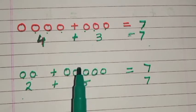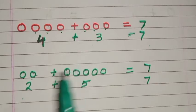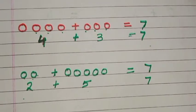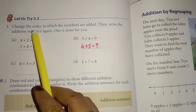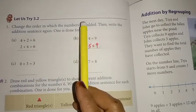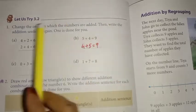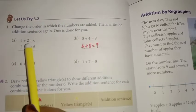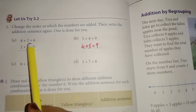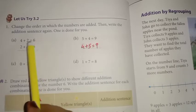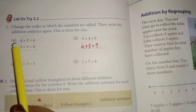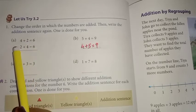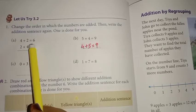You can find out some more addition sentences and do the activities in the textbook. The first activity: change the order in which the numbers are added, then write the addition sentence again. The first one is already done — four plus two is equal to six. We change the order: two plus four is equal to six. If you change the order, the answer will be the same.